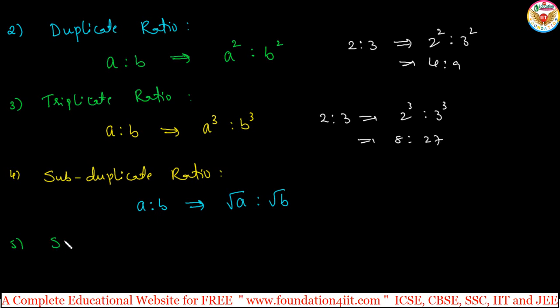And observe the same, that is the triplicate ratio we understood. Now, subtriplicate ratio. In subtriplicate ratio, for any ratio of A is to B, that is cube root here. Cube root of A is to cube root of B. This is square and cube, square root and cube root. That is duplicate, triplicate versus subduplicate and subtriplicate. Remember this.